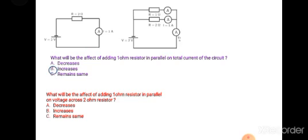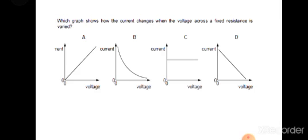What will be the effect of adding a one-ohm resistor in parallel on the voltage across the other resistor? Since the two resistors are in parallel, the same voltage will be applied across both resistors, so the voltage won't be affected — it will remain the same.